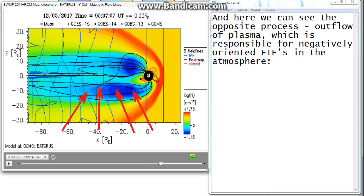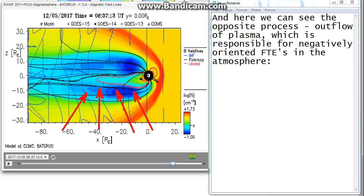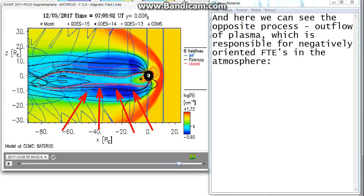And here we can see the opposite process. Outflow of plasma which is responsible for negatively oriented FTEs in the atmosphere.